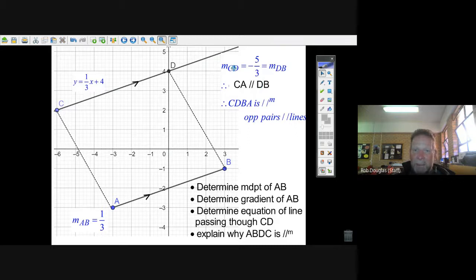Because DB and CD have the same gradient, I work out the gradient between both, then it means they're parallel. Well, now we can say CDBA is a parallelogram because we have opposite pairs of parallel lines. And that's one of the conditions, definitions for defining a parallelogram. Two pairs of opposite sides that are parallel. That makes a parallelogram.